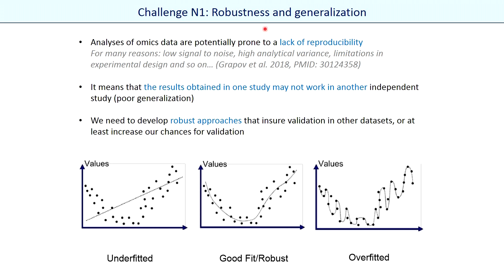When we work with omics data there are some challenges that we should take into account and pay special attention to during data analysis. We will discuss three of them and start with the robustness and generalization problem. It may happen that when we train a classifier it works very well on the training dataset, but unfortunately it doesn't mean it will also work well on another independent dataset. The first figure represents a situation when the model underfits the data — the model is a straight line and doesn't respect the non-linear nature of the phenomenon. In this case the model will not provide good results.